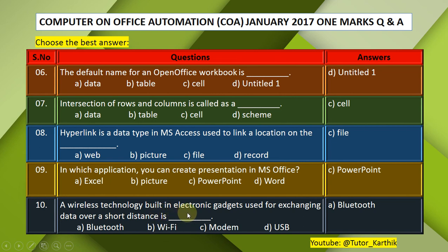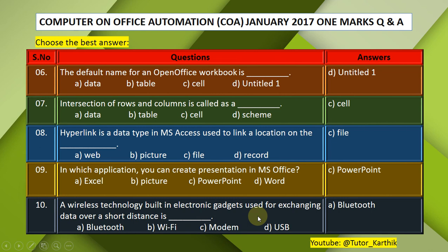Question 10: A wireless technology built into electronic gadgets used for exchanging data over a short distance is —. A. Bluetooth, B. Wi-Fi, C. Modem, D. USB. The answer is A — Bluetooth.